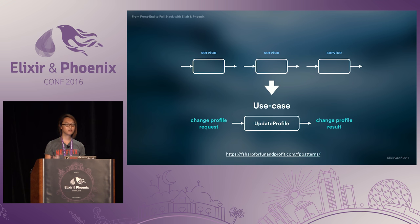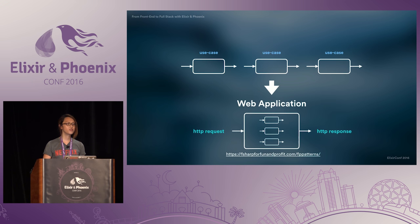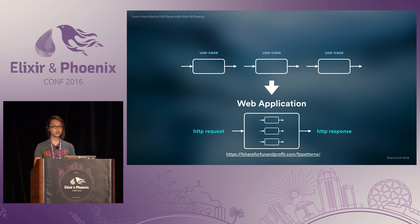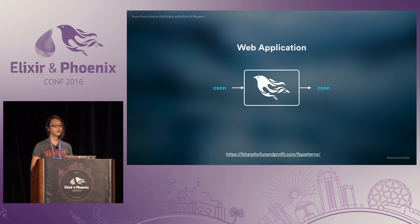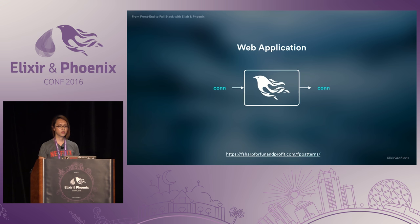We might make an email validator composed of small low-level functions. We take our services, compose them, and end up with use cases — for example, a user wanting to update their profile. And with enough use cases composed together, we end up with a web application: an HTTP request goes in and an HTTP response comes out. And if you recall, this is exactly the philosophy of Phoenix — we take a connection and we return a connection. I hope the concepts have come full circle now.